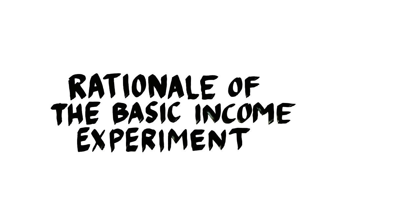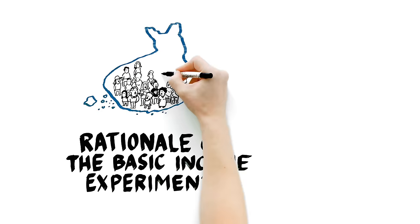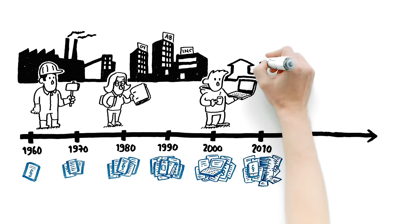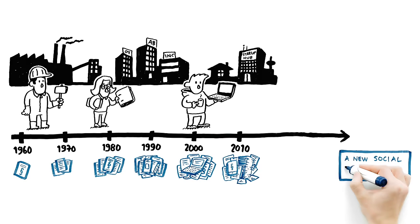The Rationale of the Basic Income Experiment. In Finland, income security is guaranteed to everyone. While the present social security system is the result of decades of development work, its basis was laid down in a very different world from ours. For this reason, a new social security model will be tried in Finland.